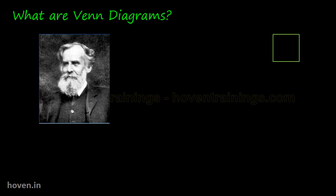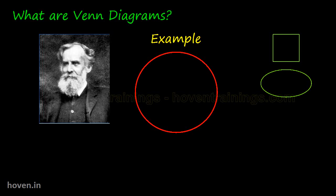The closed figure can be a rectangle, or it could be a circle — it has to be closed. Let us take a simple example where we have to draw a Venn diagram for all cows. The easiest and most appealing method would be to draw a closed figure such as a circle. This circle represents a set of all cows.